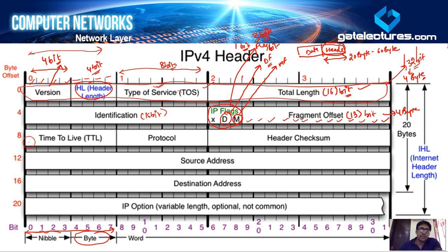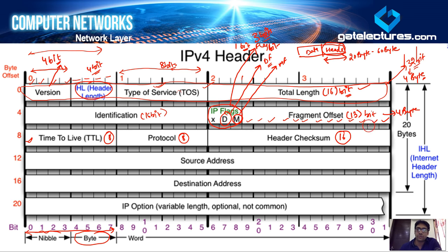The third row contains the Time to Live (TTL) field, which is eight bits, then the protocol field — indicating which protocol is being used — also eight bits, and then the header checksum field, used to check for errors in the header. We will discuss all of these in upcoming videos. This entire third row is again four bytes.